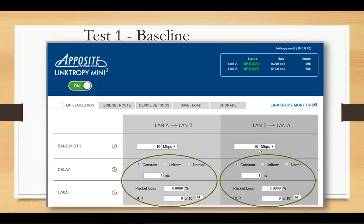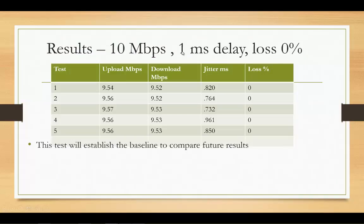Test one: LAN A to LAN B set up for 10 Mbps to keep things simple, matching the customer's 10 Mbps link to their remote site, with only one millisecond of delay one-way and one millisecond back — no packet loss. This is our baseline. Out of 10 Mbps we got 9.54 up and 9.52 down, very consistent with almost no variance. Jitter is about 0.820 milliseconds and loss is zero all the way down. Everything's working, and now we know what 'all right' looks like.